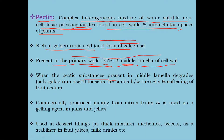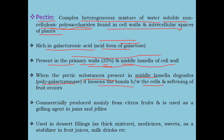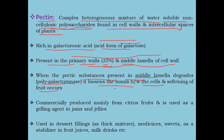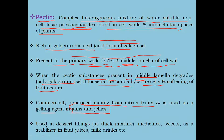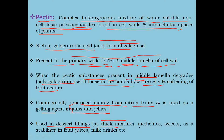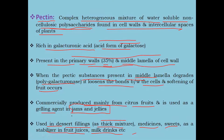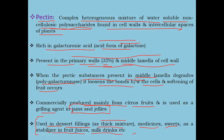When the pectic substance present in the middle lamella degrades by enzymes known as polygalacturonase, it loosens the bonds between the cells and softening of fruits occurs. Commercially, pectin is produced mainly from citrus fruits and is used as a gelling agent in jam and jelly. Also, pectin is used in dessert fillings, medicines, sweets, as a stabilizer, in fruit juices, milk drinks, etc., making it very important in food, medicine, and drink industries.